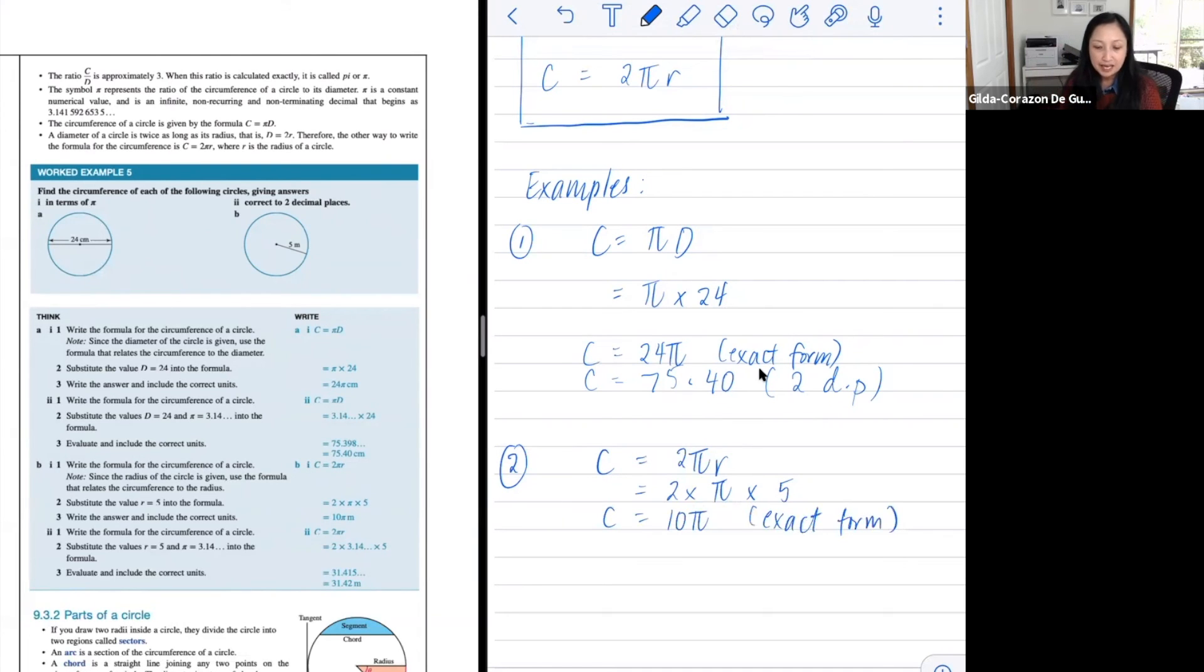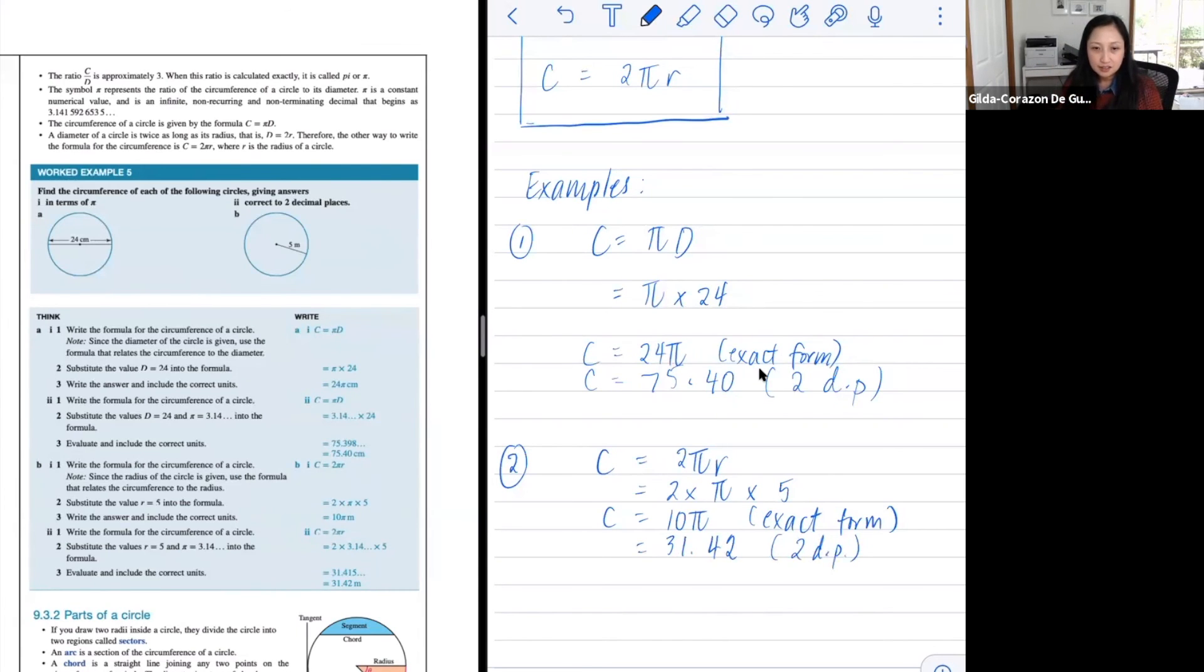And once you have that, for you to write down into two decimal places, then that would just be 31.42 to two decimal places. See you all, everyone. Have a good day.